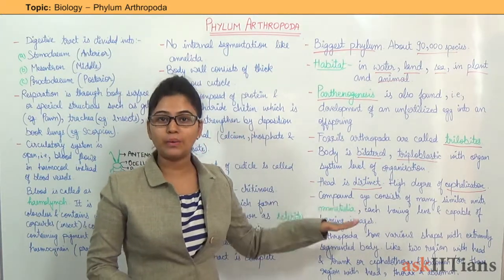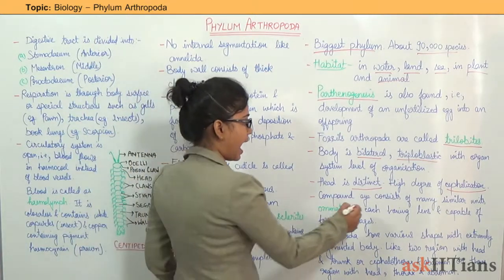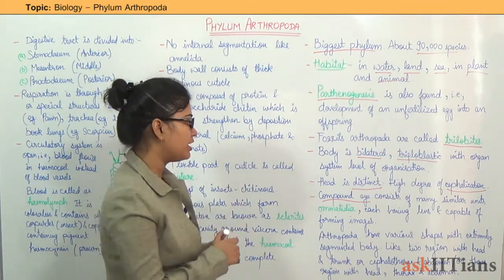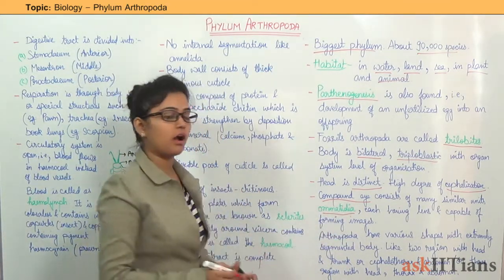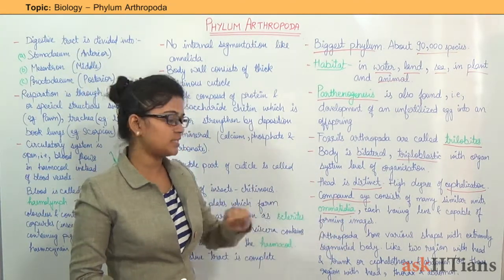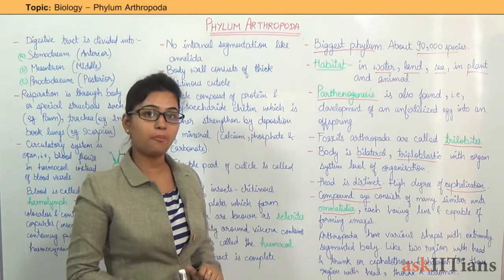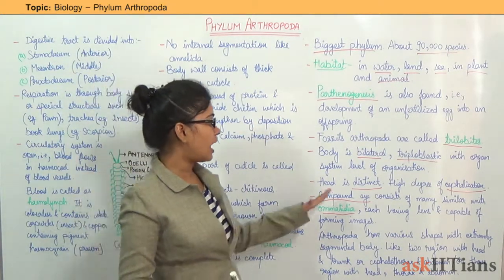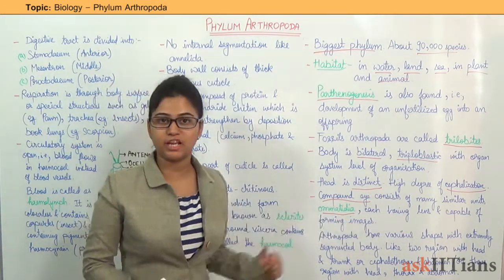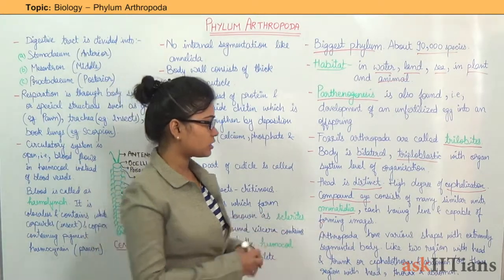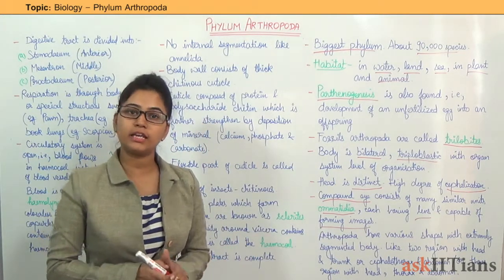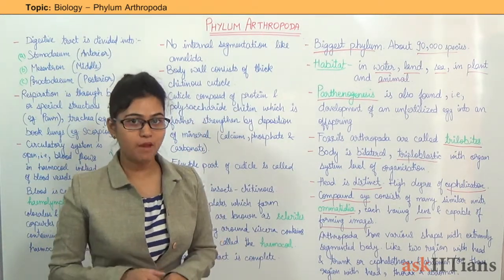Compound eyes are found in case of Arthropoda, and these compound eyes consist of many similar units known as Ommatidia. Each compound eye has a lens and is capable of forming images. This is also a distinct feature of Arthropoda.